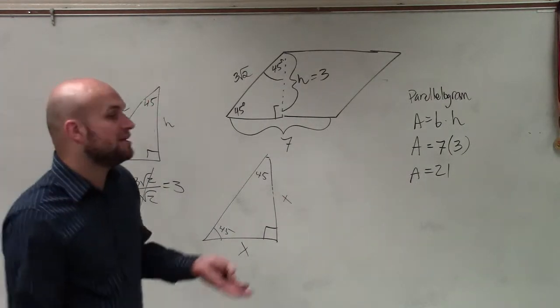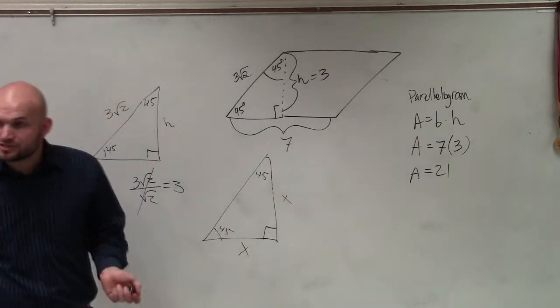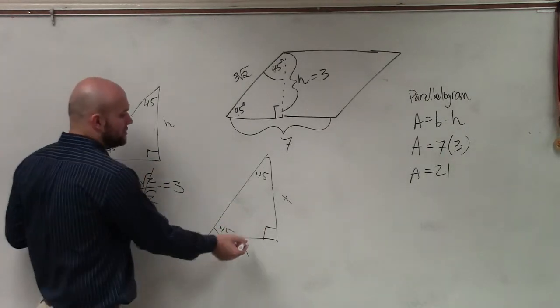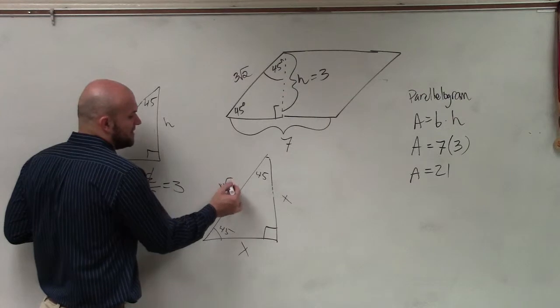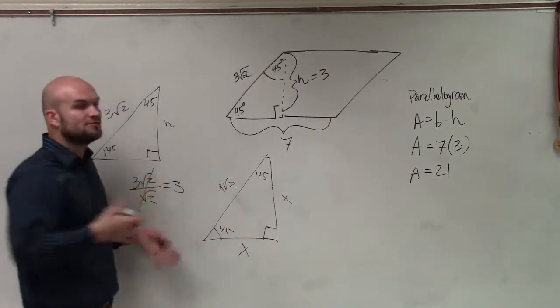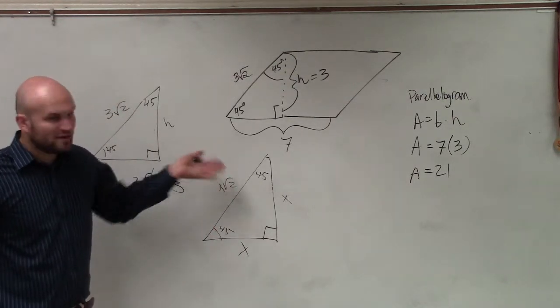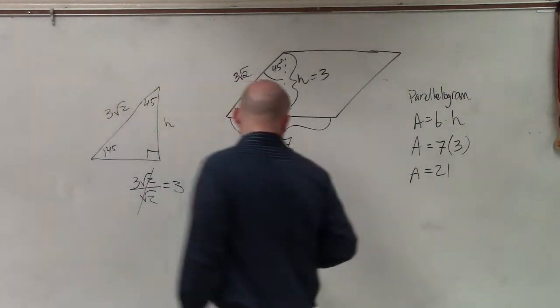And then, if I wanted to find the hypotenuse of that triangle, you would just take the leg and multiply it by the square root of 2. That worked for all 45, 45, 90 triangles. So an example.